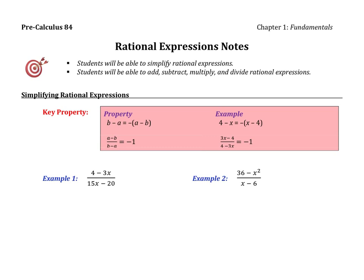The first thing I want you to pay attention to is a key property: if you have a binomial like b minus a and you flip it around, you get the opposite. So instead of 4 minus x, you can write x minus 4, but you must place a negative 1 in front. Also, if a fraction has opposite binomials in the numerator and denominator, it simplifies down to negative 1. Look for those examples as we go through.